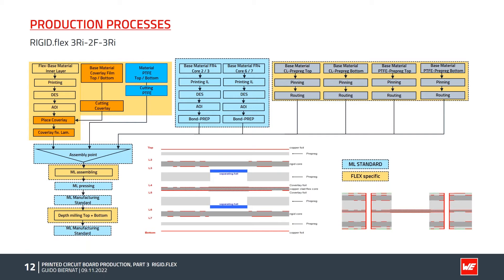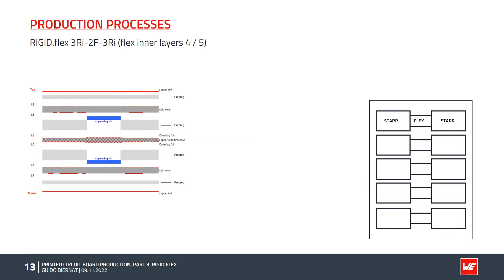The yellow highlighted fields represent the typical manufacturing processes specific to rigid-flex technology — these processes are not needed for standard rigid PCBs. We will take a closer look at those yellow processes. The first step is to produce the flex inner layers 4 and 5.